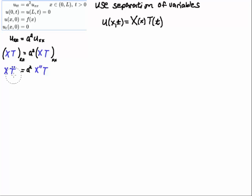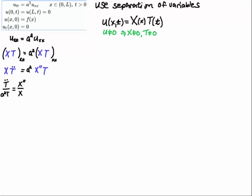Taking two derivatives with respect to x and two derivatives with respect to t — to distinguish between those derivatives, I'll use dot notation for the derivative with respect to t. So I get two dots in this equation and two primes for the spatial derivative. Then I proceed with separation of variables and get this equation by doing some algebra.